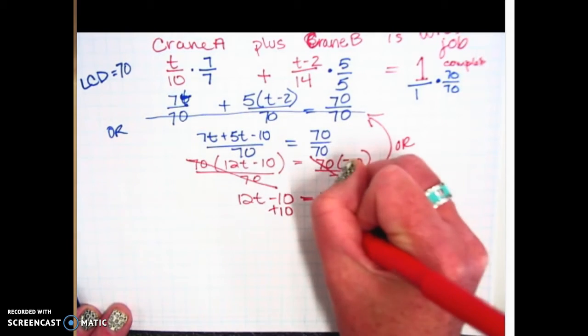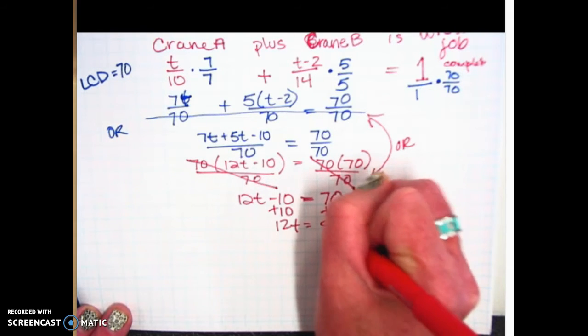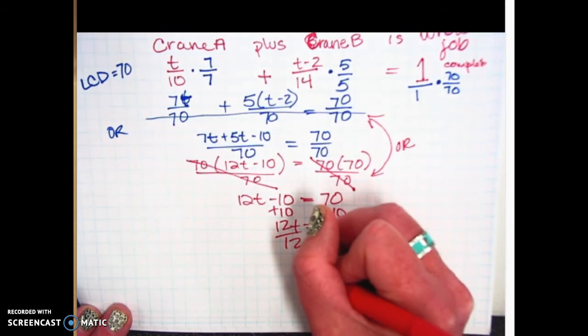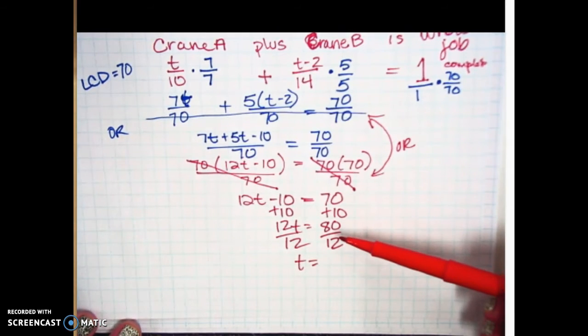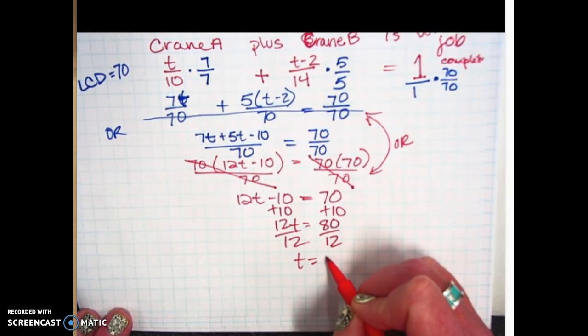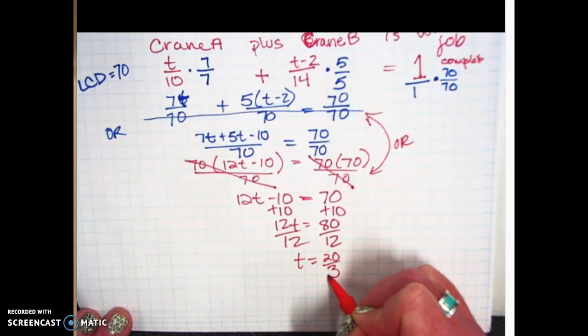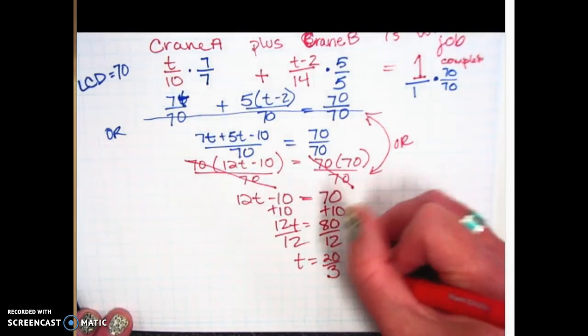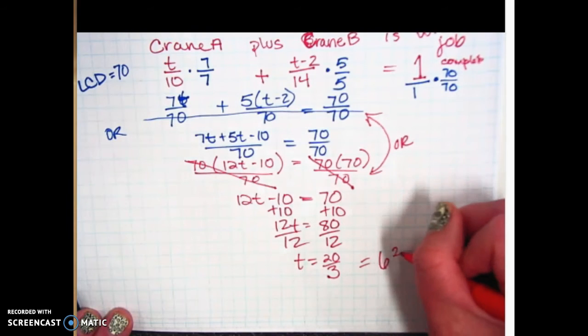Add 10. So 12T equals 80. Divide both sides by 12. And then I reduced it. So divide by 4. 80 divided by 4 is 20. 12 divided by 4 is 3. And so I think I changed that to hours. So 3 goes into 20, 6 times. 6 and 2 thirds hours.